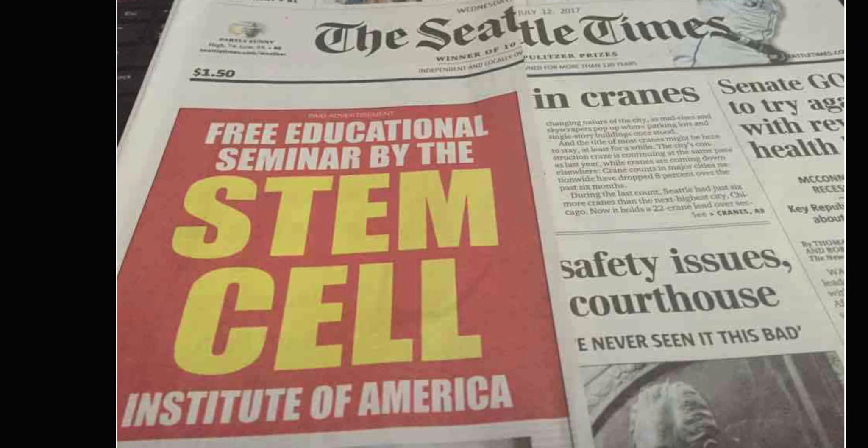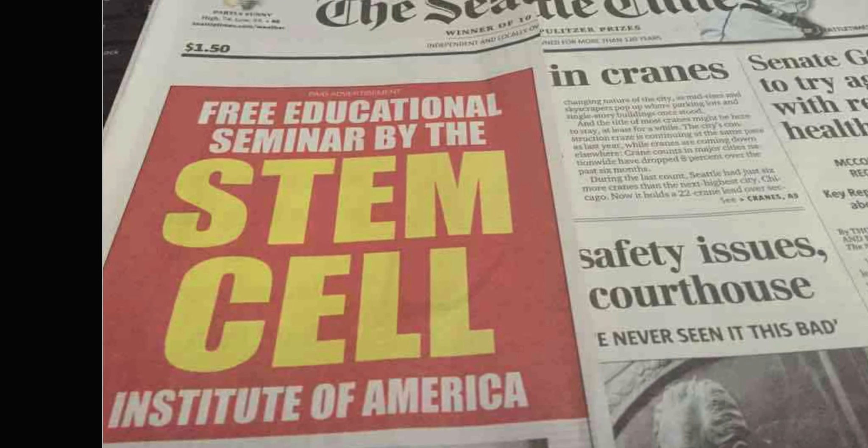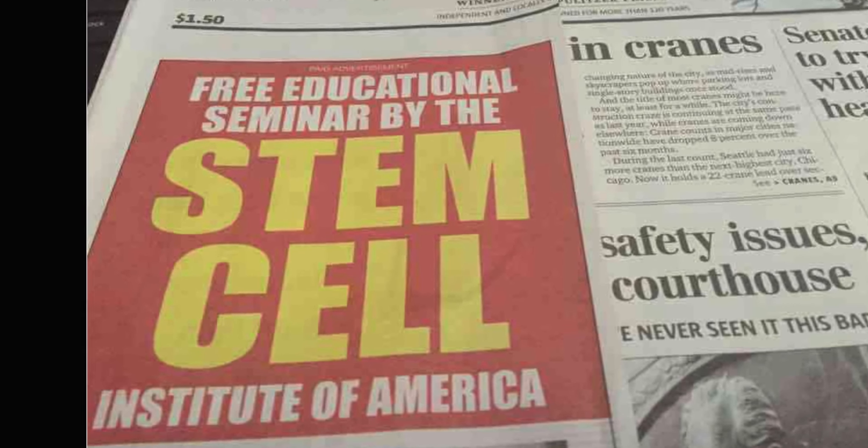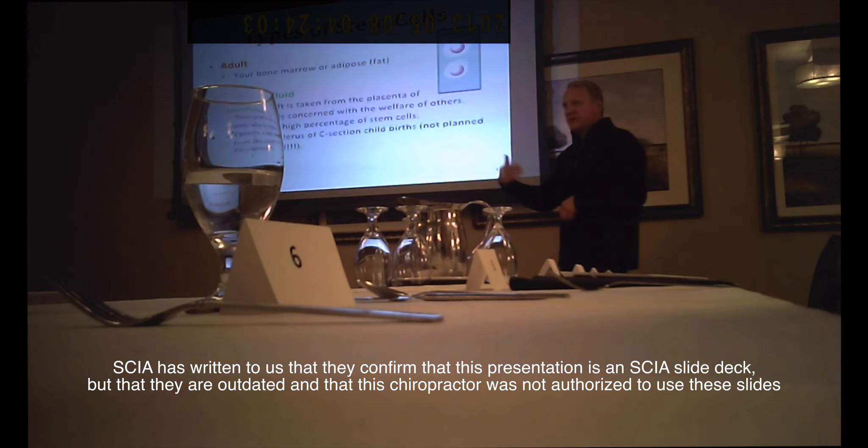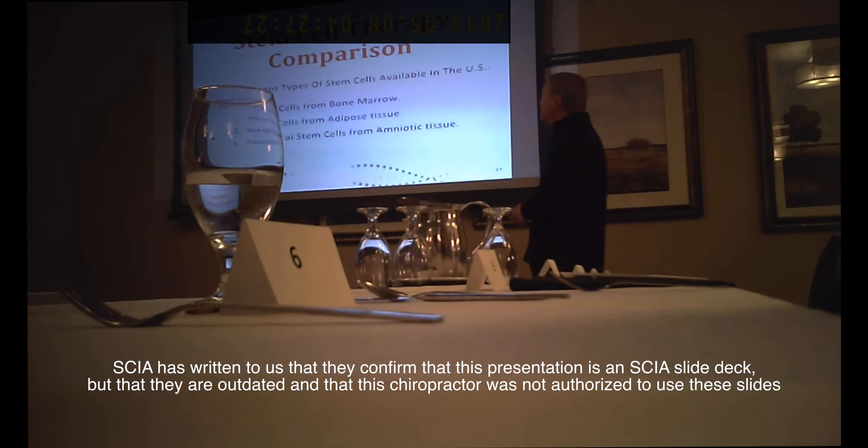You've probably seen ads for this company in the newspaper. Let's take a look at a chiropractor giving a seminar on amniotic stem cells. After the child is born, they're able to save the placenta, process that, and then that's where we get stem cells from, for the alternative to adult stem cells. And then finally, placental stem cells from amniotic tissue. The amniotic tissue is so much more active.